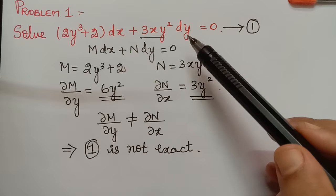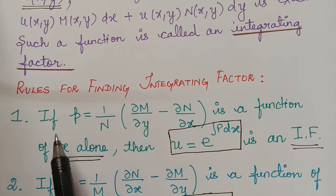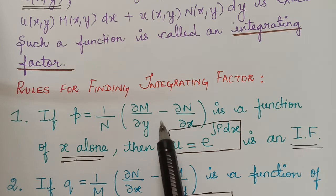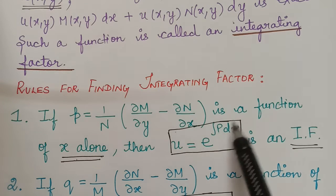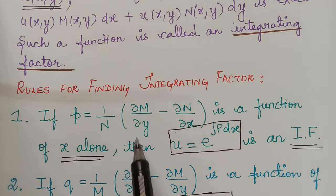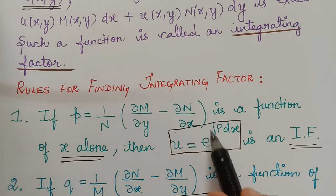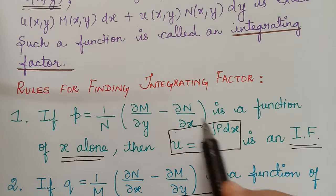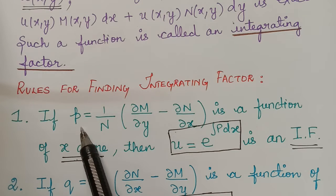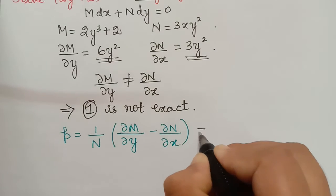We shall first use the first rule and check whether it works. As per the first rule, if P = (1/N)(∂M/∂y − ∂N/∂x) is a function of x alone, that is independent of y, then the integrating factor u is given by e^(∫P dx). So let us evaluate P by substituting values.